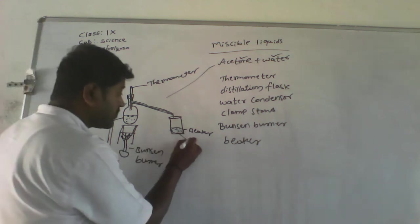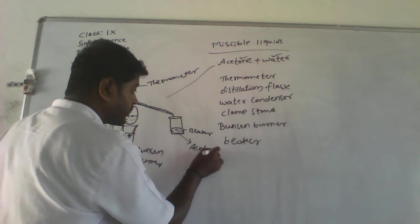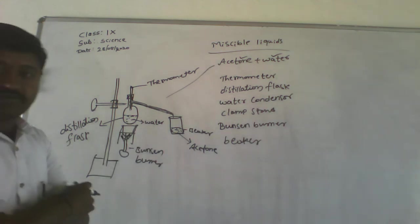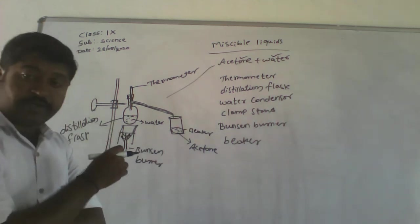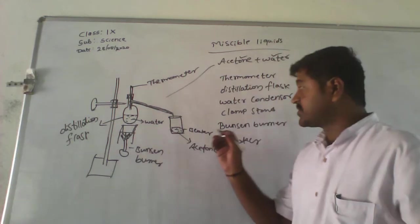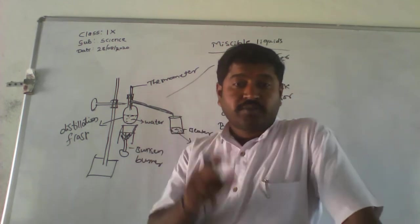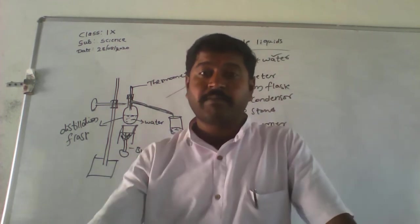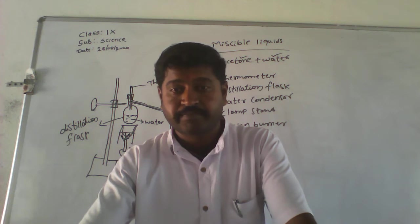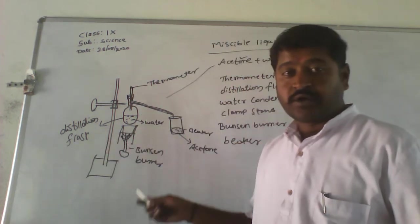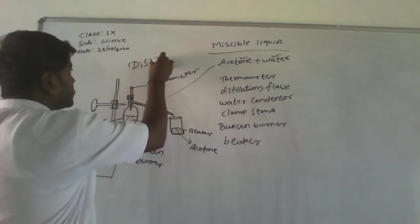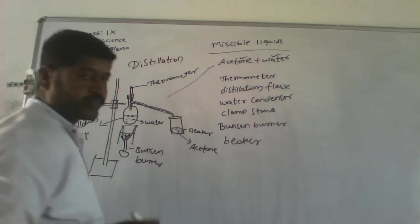So here, the acetone has evaporated and the water is left in the distillation flask itself. It means water has a higher boiling point compared to acetone. So while doing this process, the two liquids must have two different boiling points with a minimum difference of 25 Kelvin. This process is called Distillation.